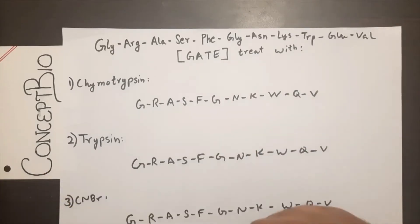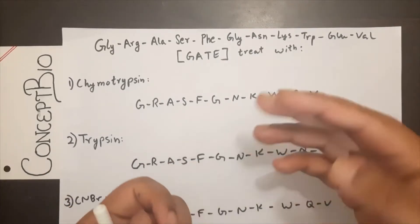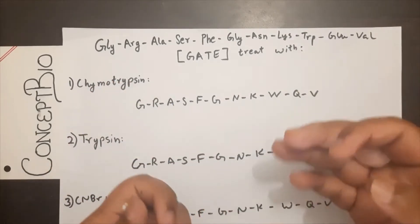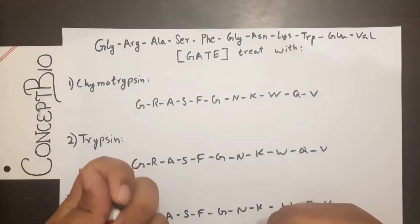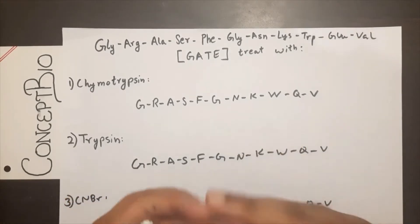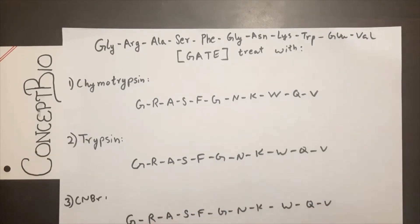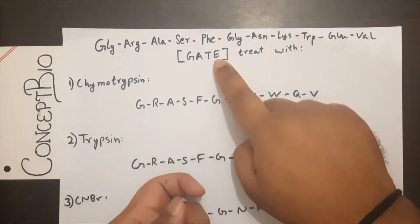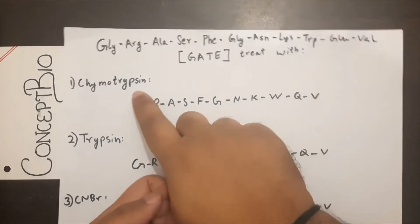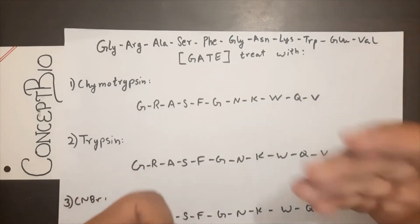Welcome back to Concept Bio. In this video, I'm going to be looking at how we can determine the cleavage sites for a peptide sequence based on the different proteolytic enzymes or chemical reagents provided. I'll be going over a particular GATE question where they gave a peptide sequence, specified chymotrypsin as the proteolytic enzyme, and asked to find the number of fragments that would be formed.